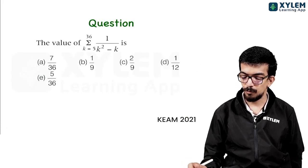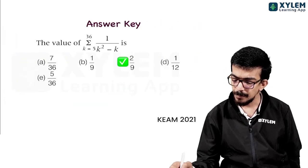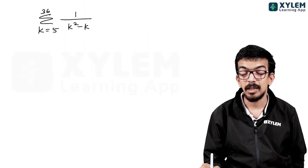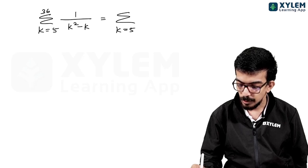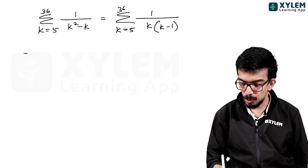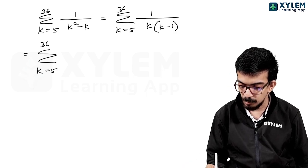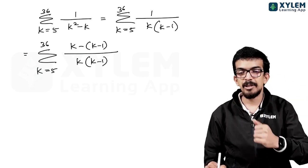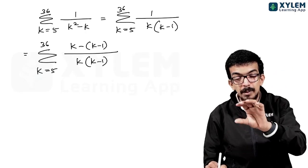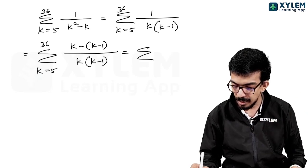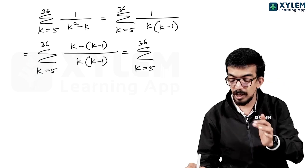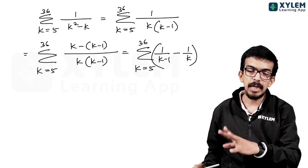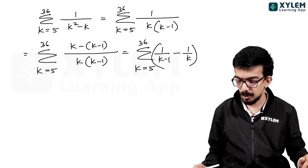Next question: the value of sigma from k equals 5 to 36 of 1/(k² − k). This is a typical telescoping series question. We use partial fractions: 1/(k² − k) = 1/(k(k−1)) = 1/(k−1) − 1/k. When we write out the terms: k=5 gives 1/4 − 1/5; k=6 gives 1/5 − 1/6; k=7 gives 1/6 − 1/7, and so on.